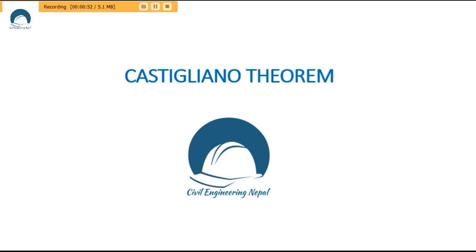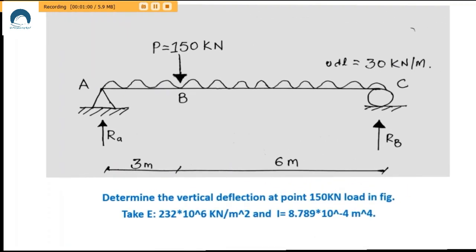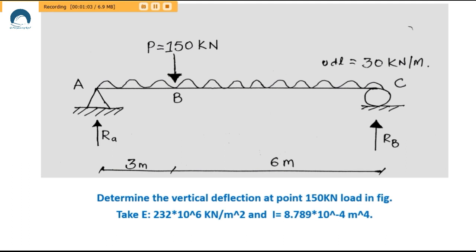Instead of expanding the theory, I will directly lead you towards the numerical problem. Here we have a problem asking us to determine deflection at point B due to a load of 150 kN. There is also a uniformly distributed load throughout the beam of magnitude 30 kN/m, and the values of E and I are given in the figure.